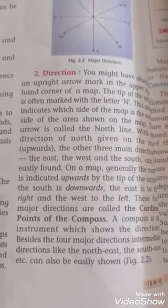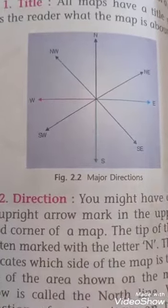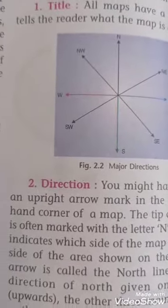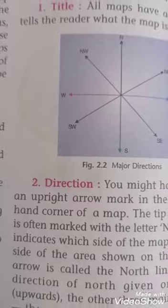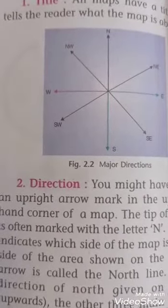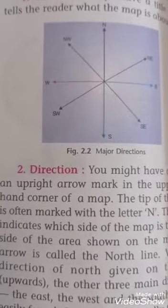You can understand with the help of this figure. All maps should show direction with an upright arrow mark in the upper right hand corner. The tip of the arrow and downside of the arrow, these are known as directions.